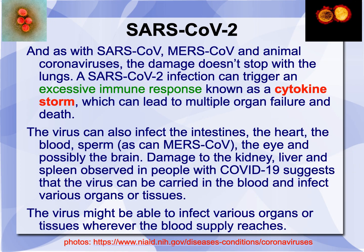It can also trigger an excessive immune response known as a cytokine storm — your immune system going crazy — which can cause multiple organ failures and death. This is where your immune system causes more damage than the virus itself, which is saying something because the virus already causes serious issues. It can also infect the intestines, and evidence suggests it can affect the heart, blood, sperm, eyes, possibly the brain, and damage the kidneys, liver, and spleen. Once it gets into the bloodstream, it can go anywhere and bind to the ACE2 receptor to cause problems.